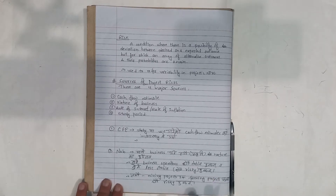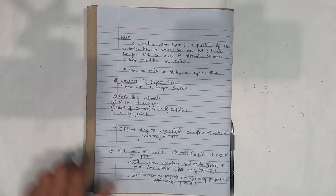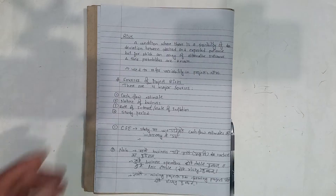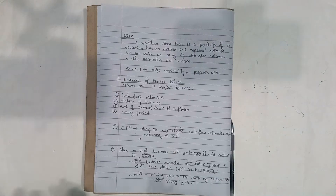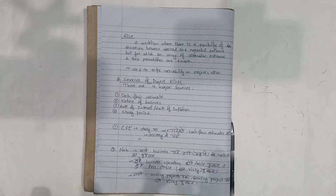Risk is also used to refer to variability in a project's net present worth — how much variance is represented in the net present worth.